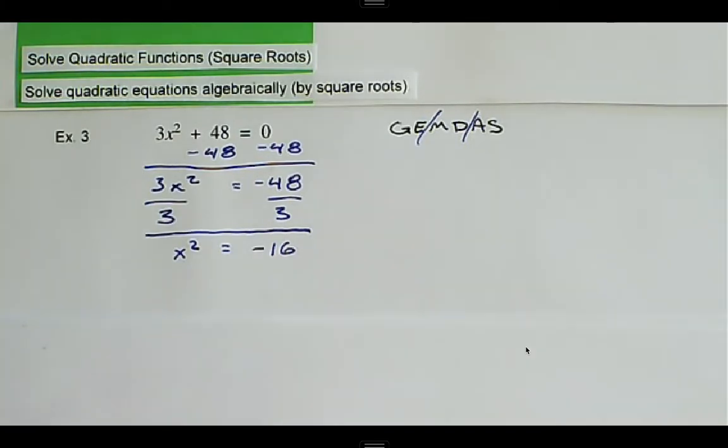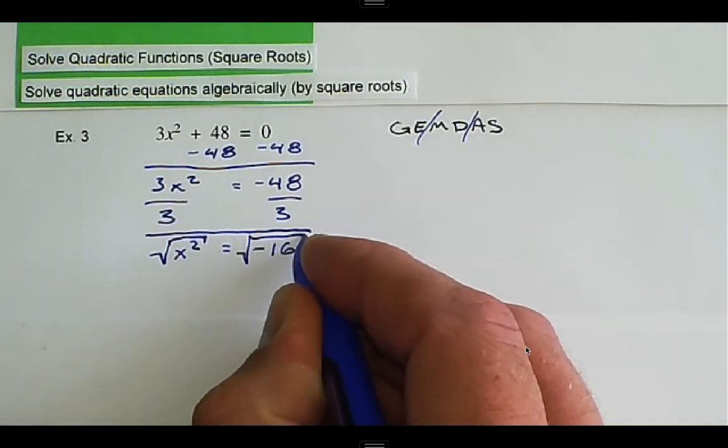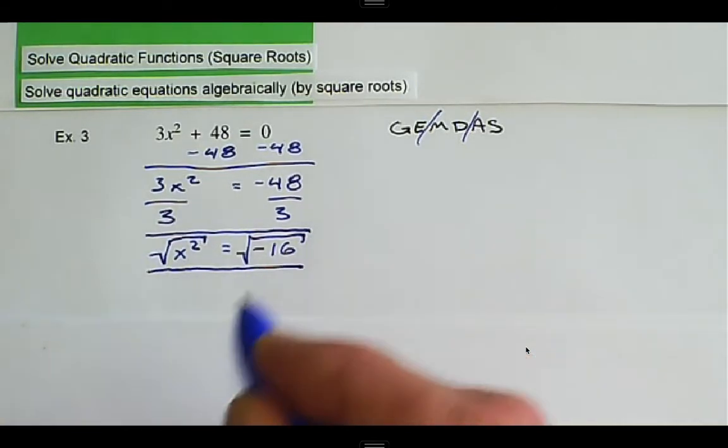Now to get x by itself, we have to take the square root of both sides, and here we run into a problem.